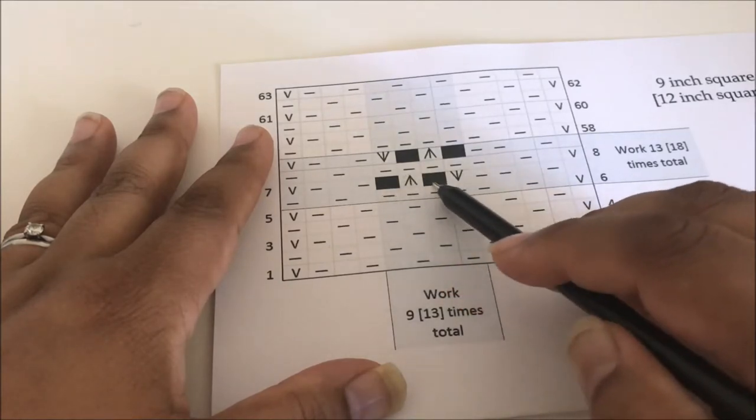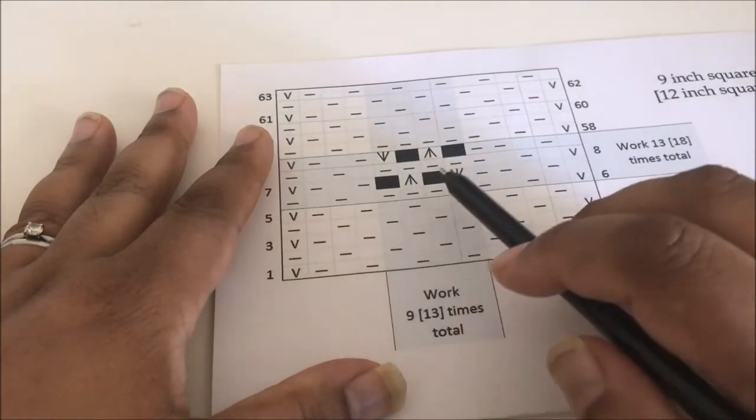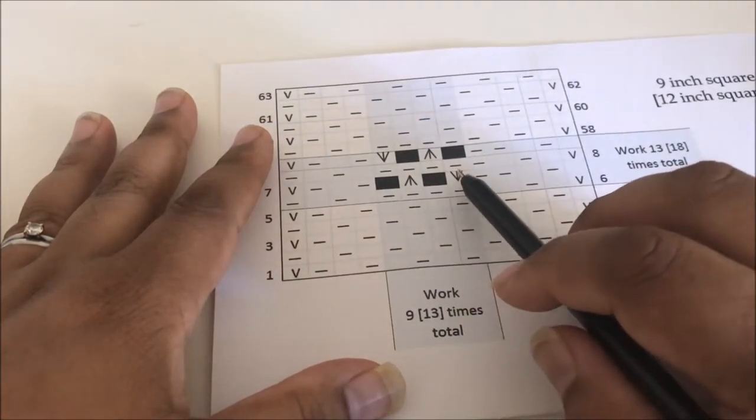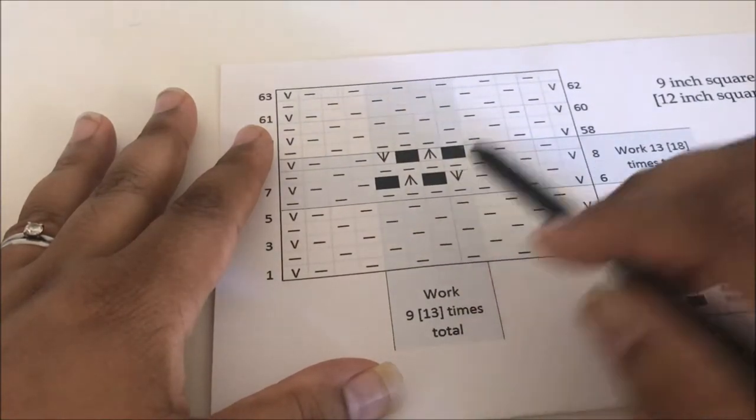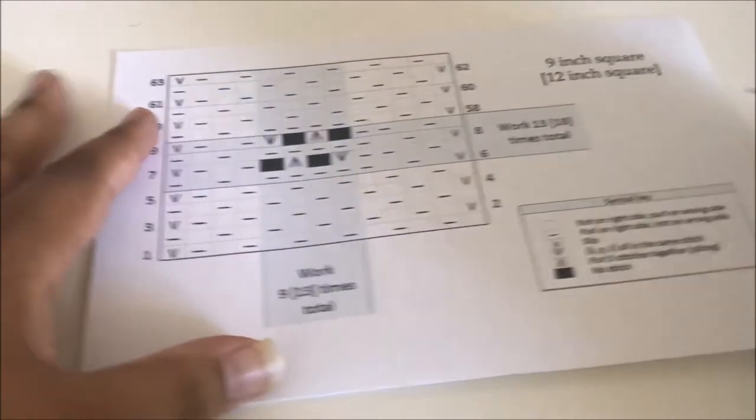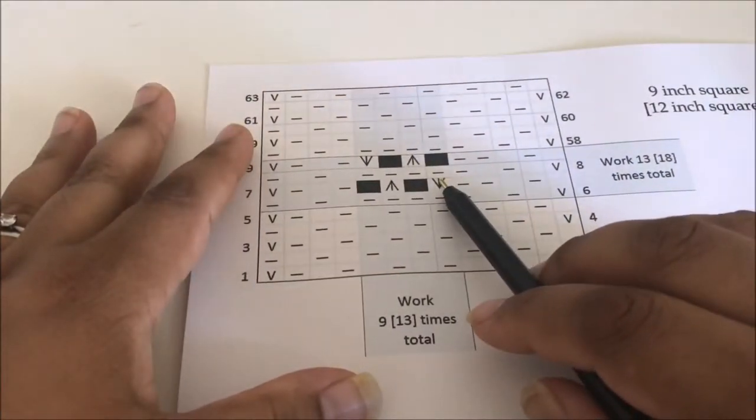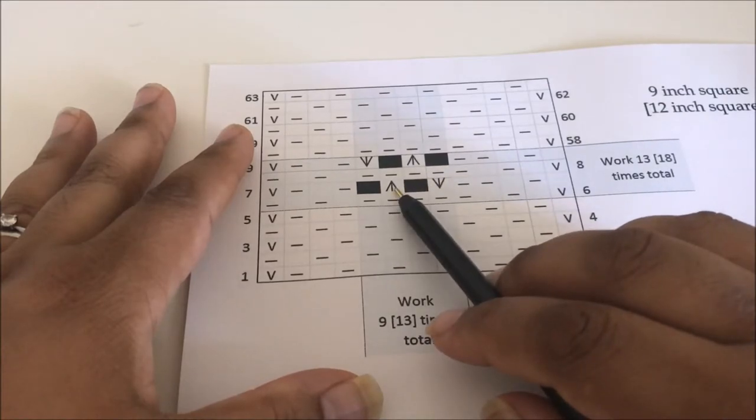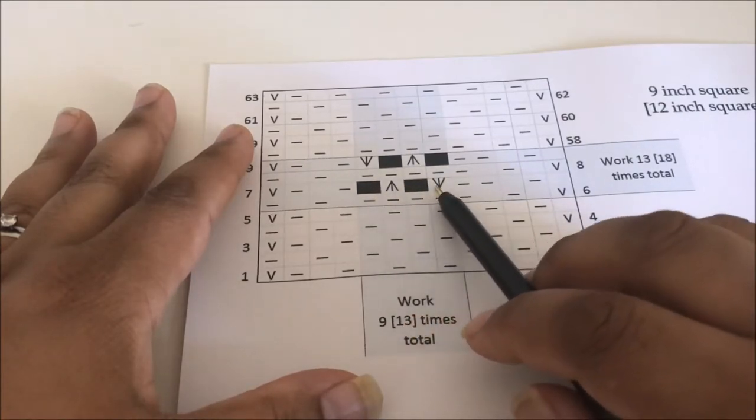So this shape you can start to see now is that decrease. That's why we have some space here. We're going to fill that space by adding stitches here. This stitch is a knit purl knit all in the same stitch. So this one increases to three, and this one decreases three into one. So we still end up with four stitches in our pattern repeat over here.